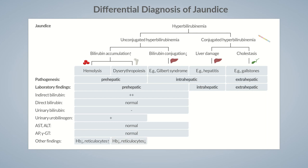Gilbert syndrome is caused by decreased UDP-glucuronosyltransferase enzyme activity. Although the disease occurs in the liver, laboratory findings suggest a prehepatic cause. Gilbert syndrome is categorized into prehepatic jaundice because it represents a common differential diagnosis. Classical laboratory findings are elevated indirect bilirubin, the absence of bilirubin in urine, and normal serum transaminase levels. However, urine urobilinogen levels are decreased in Gilbert syndrome.